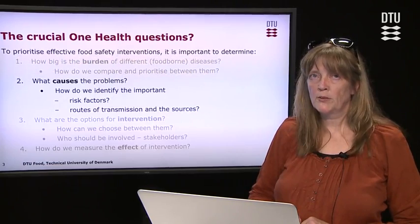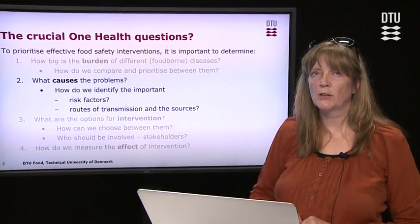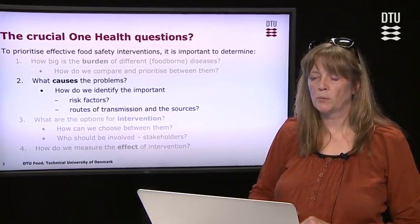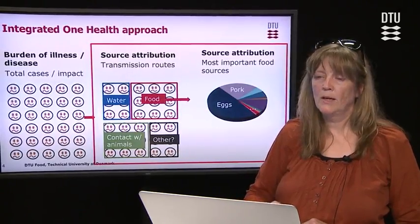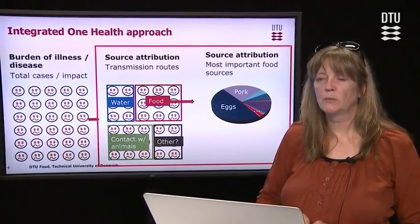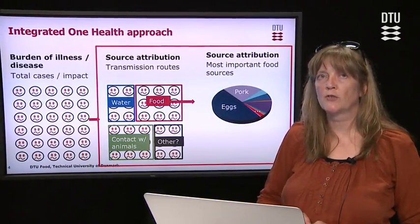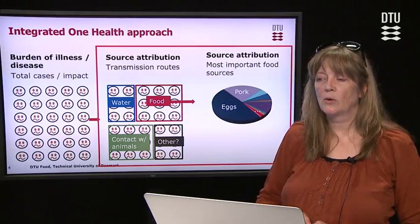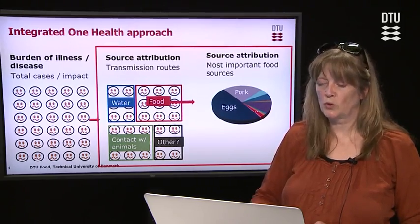Source attribution methods addresses the number two One Health question: what causes the problem? Seen in the integrated One Health approach, we are going to talk about methods to identify transmission routes and also the most important food sources.